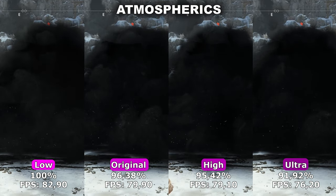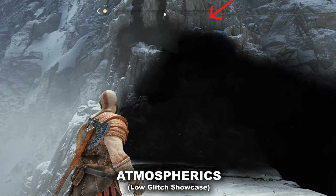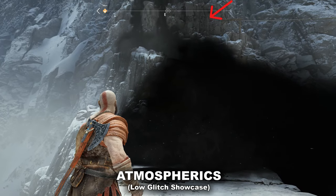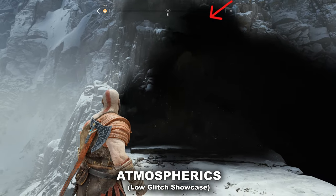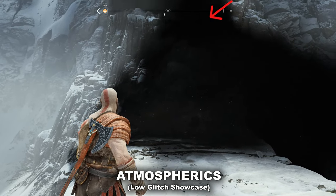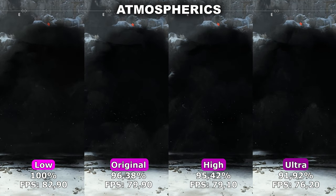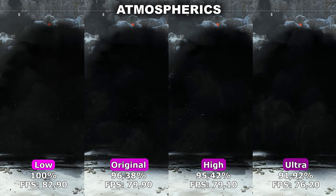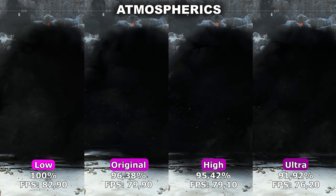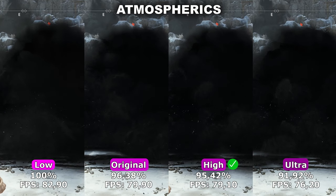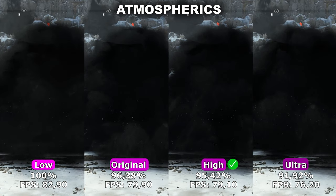It's worth noting that I did experience a weird glitch with the low setting, which would be quite game-breaking if experienced frequently while playing. Furthermore, other people have experienced similar glitches with the original setting as well. Therefore, I would recommend using the high setting for Atmospherics to ensure you don't experience any of those weird glitches.